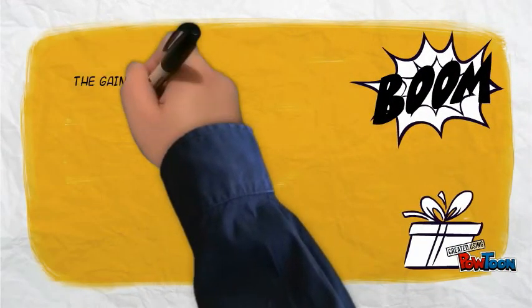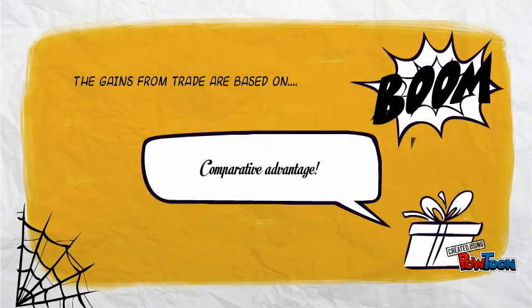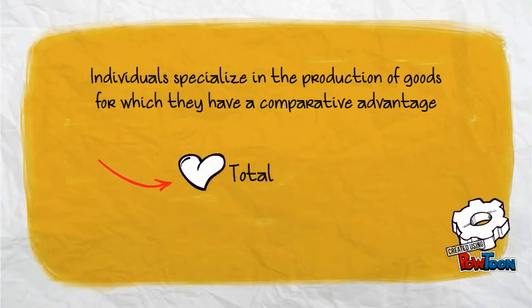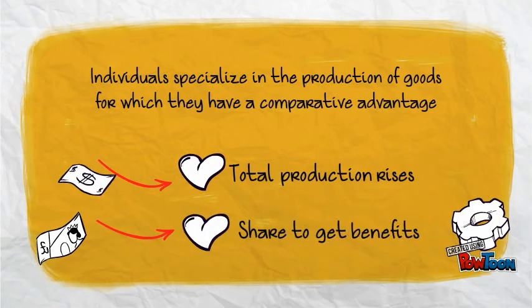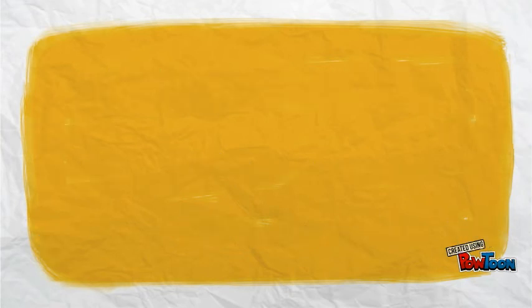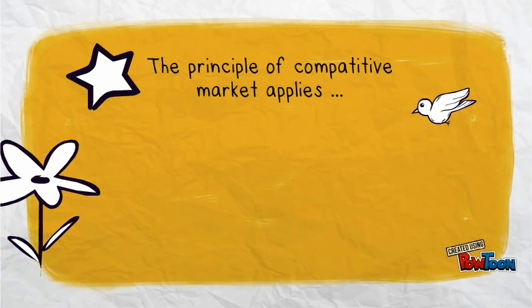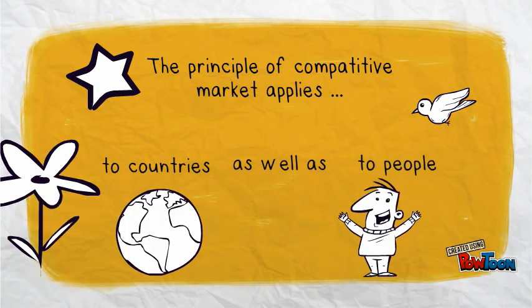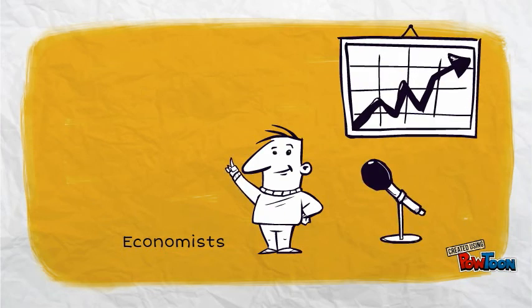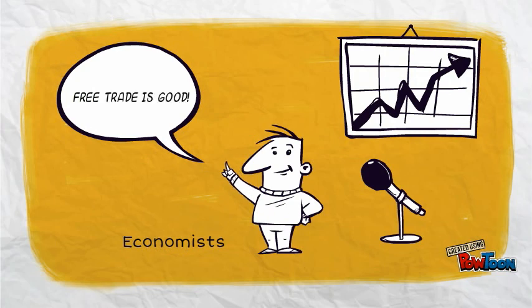The gains from trade are based on comparative advantage, not absolute advantage. When individuals specialize in the production of goods for which they have a comparative advantage, total production will rise and people share together to get benefits from trade. The principle of comparative advantage applies to countries as well as to people. Economists use the principle of comparative advantage to advocate for free trade among countries.